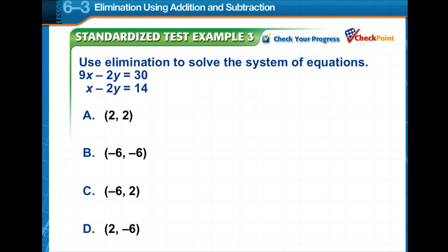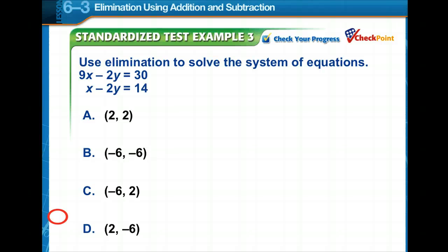Time to check your progress. This one's a little tricky — notice both equations have negative 2y, so we'll need to use subtraction. Pause the video, work the problem, choose your solution, and turn it back on to find out if you're correct. Our solution is (2, −6).